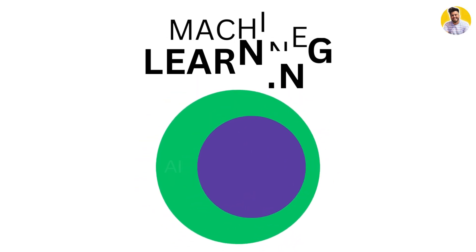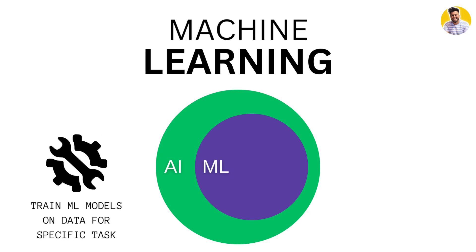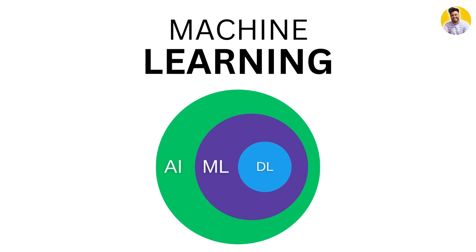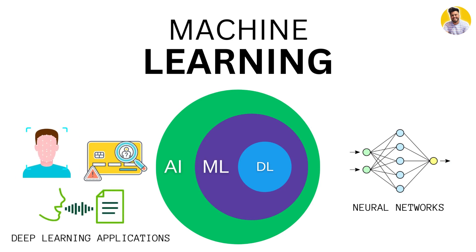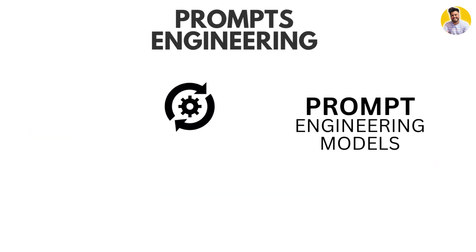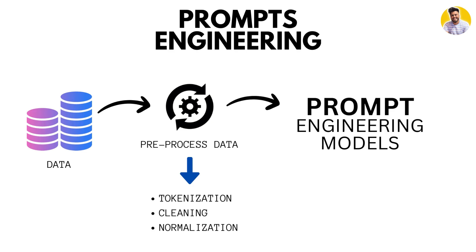Machine learning is a subfield of artificial intelligence that involves training computer systems to learn from data rather than being explicitly programmed. Deep learning is a specific type of machine learning that involves training artificial neural networks with multiple layers to perform complex tasks such as image recognition or natural language processing. Once you have gathered the data for your prompt engineering model, it's important to pre-process it — tasks such as tokenization, cleaning, and normalization.